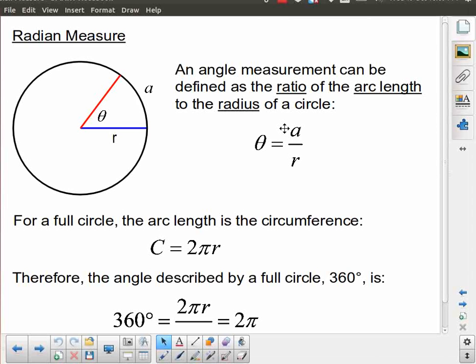In this lesson we're going to be returning to trigonometry, and the way we're going to start our discussion is to introduce a new type of angle measurement. Some of you may be familiar with this already. There is a type of measurement called a radian measure.